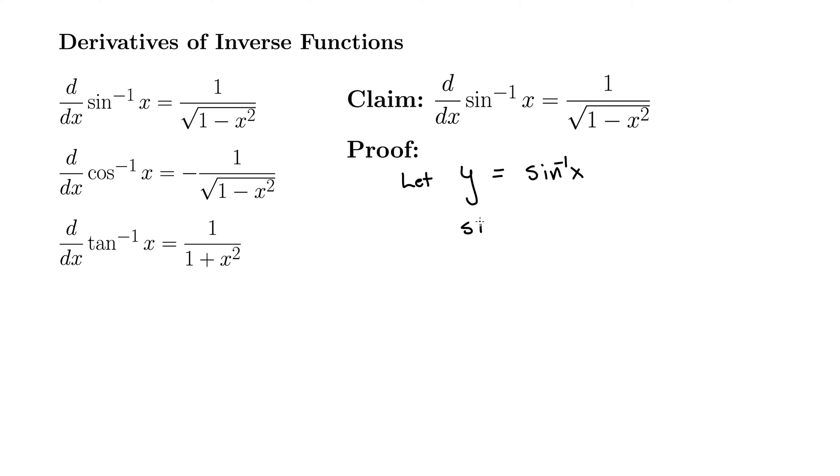And let me just say one thing up here. The range of arcsine of x is negative pi over 2 to pi over 2. So I'm just going to say that about y, because it'll come in useful later. Negative pi over 2 is less than or equal to y is less than or equal to pi over 2.